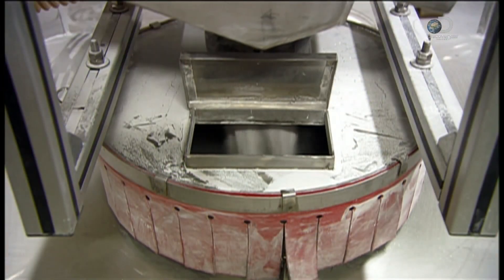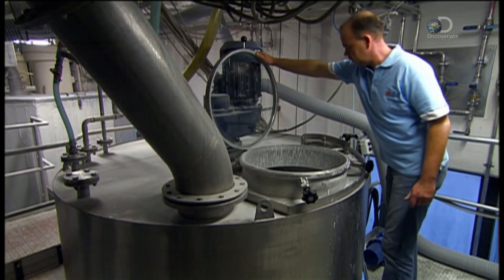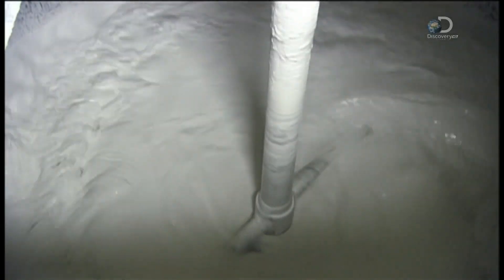To make spark plugs, they blend alumina ceramic powder and other ingredients with water. After a thorough mixing, the milky-looking brew drains into a big dryer, which converts it back to powder.